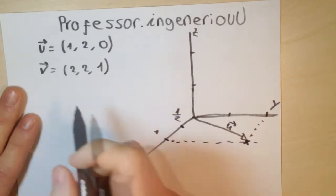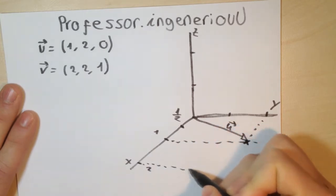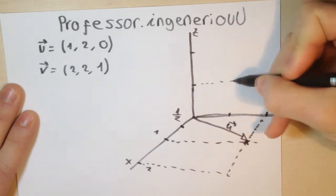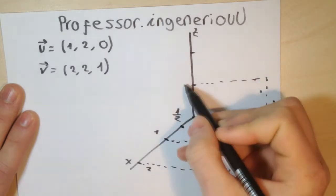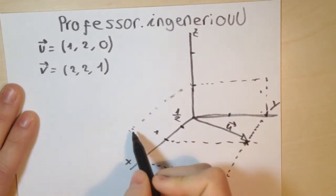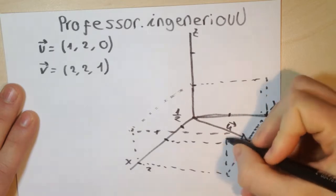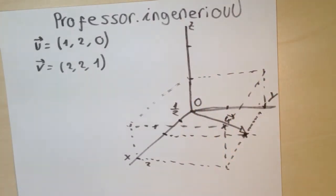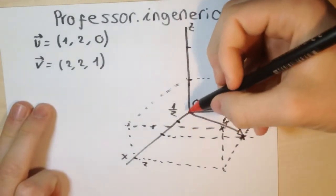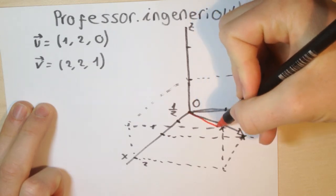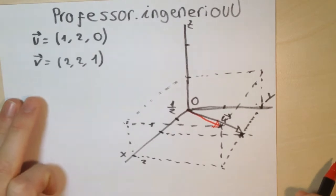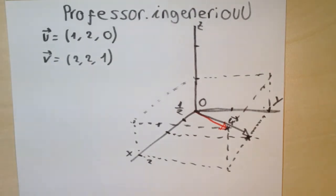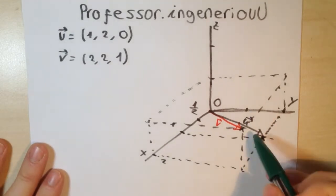Now I'm drawing V: it's (2, 2, 1). So 2 is here, 2 is here, and 1 is here. I'm drawing it like a parallelogram, like a box. From the origin O to here — I'm going to draw it in red. I couldn't have chosen worse vectors because the red one is so close to the black one.